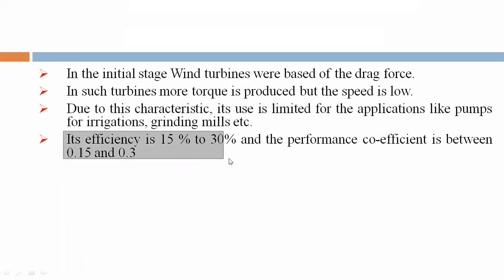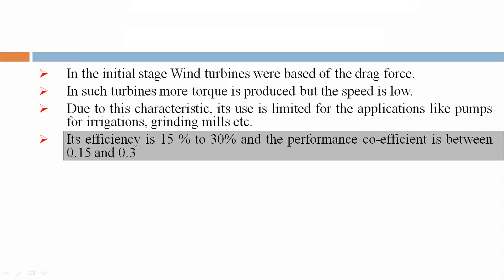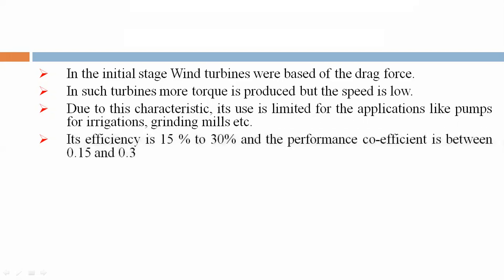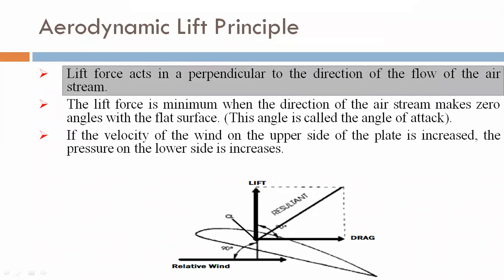The efficiency of drag-based wind turbines is 15% to 30% and the performance coefficient is between 0.15 and 0.3. Now we are discussing the aerodynamic lift principle. A lift force acts perpendicular to the direction of flow of the air stream.